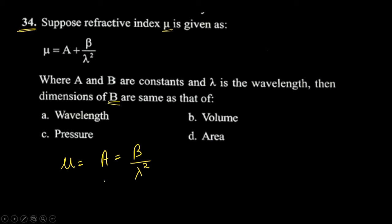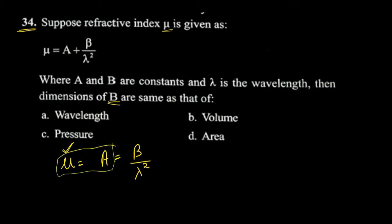We will talk about the refractive index mu. If mu is the refractive index, it will be dimensionless — no dimensions. So if B divided by lambda squared is added to mu, and mu is dimensionless, then B divided by lambda squared must also be dimensionless.